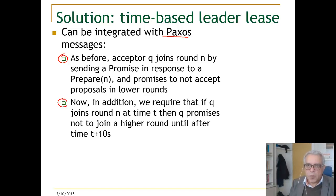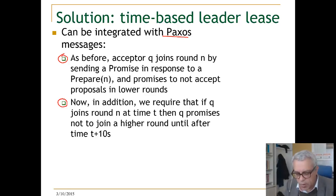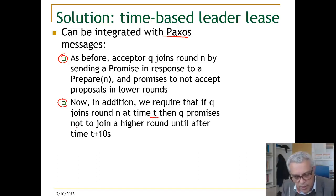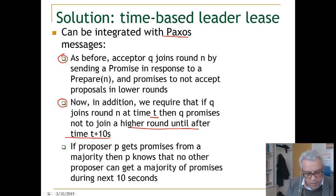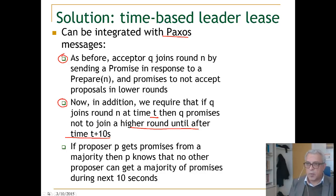In addition, this prepare is also a request for the acceptors not to accept any other proposal for a period of time. So now, if Q joins round N at time T, then Q promises not to join any higher round until time T plus 10 seconds — that is the period of the lease. If proposer P gets promises from a majority, he knows that no other proposer can get a majority of promises during this next 10-second period.